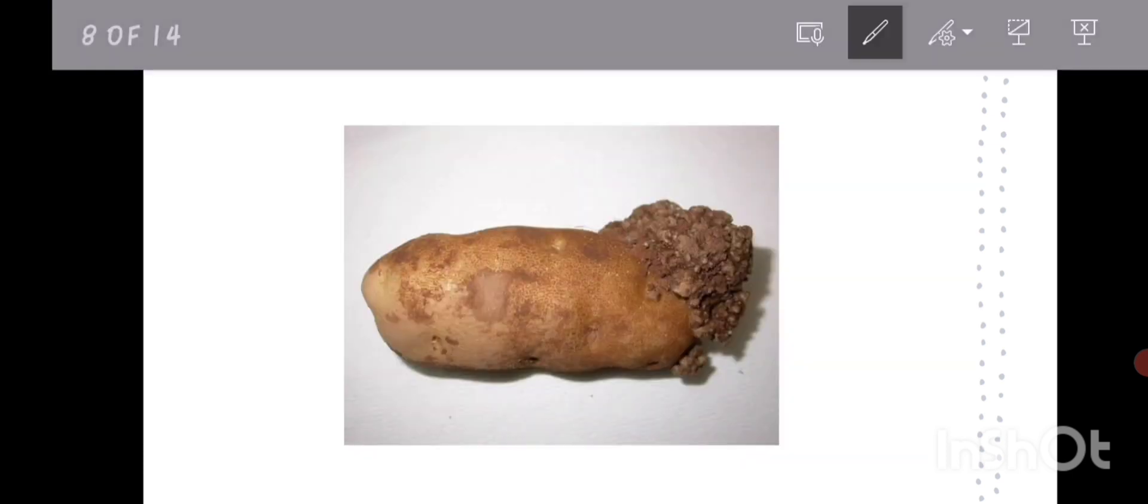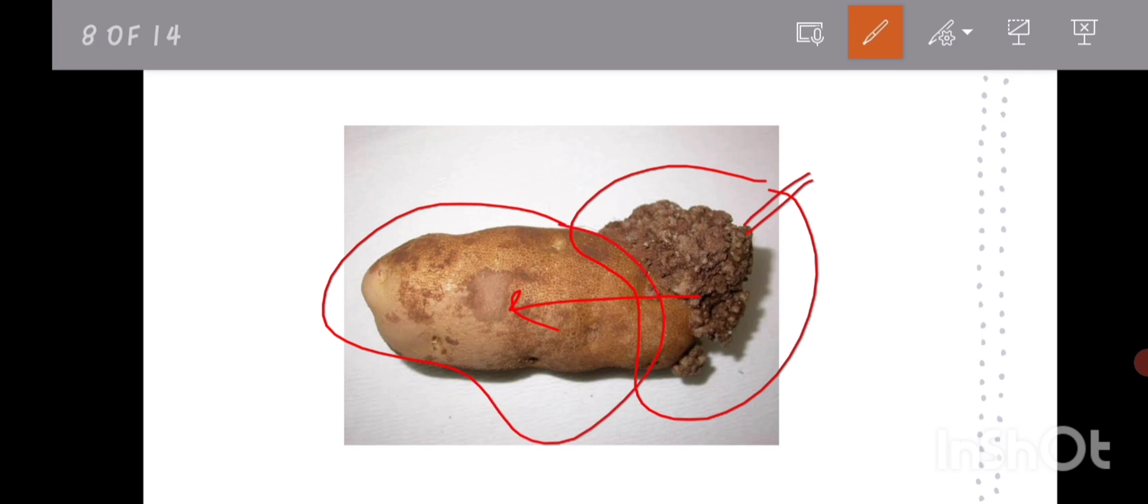The next example is wart disease of potato, caused by Synchytrium endobioticum. This wart-like swelling prevents the entry of the pathogen to this side, so the whole potato tuber can be protected and the pathogen is prohibited in this area.